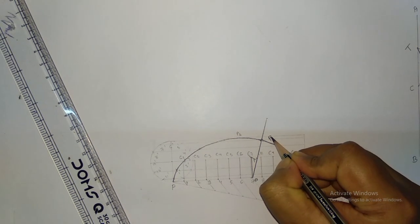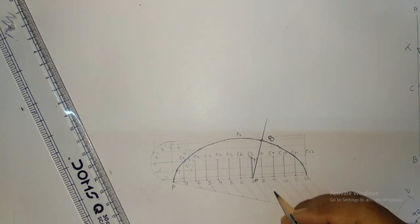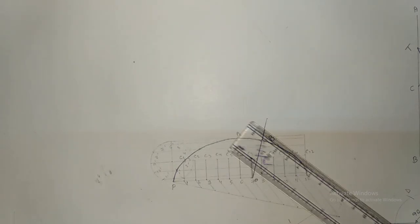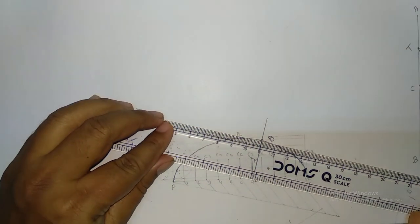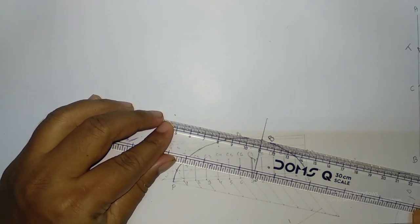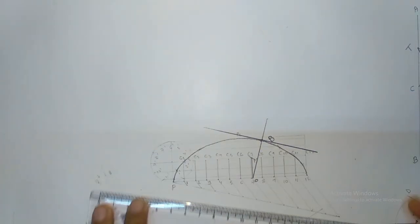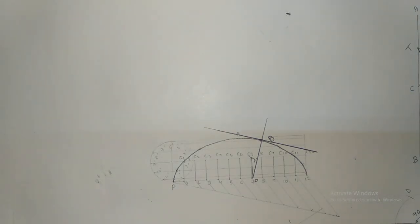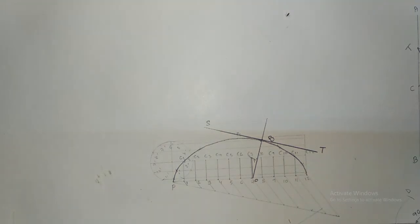Suppose some point B — so if you join O and B, this will give you the normal. So OB is your normal. For the tangent, you have to draw the perpendicular line on the normal — then this perpendicular will be your tangent. Suppose this is S and this is T, so ST is your tangent. This is the completion of your cycloid.